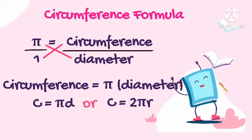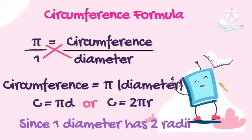We can also represent the formula when the radius is given. Since the diameter equals twice the radius, we can write C = 2πR. The 2R in that formula is equivalent to our diameter. So we have two formulas: C = πD when diameter is given, and C = 2πR when radius is given.